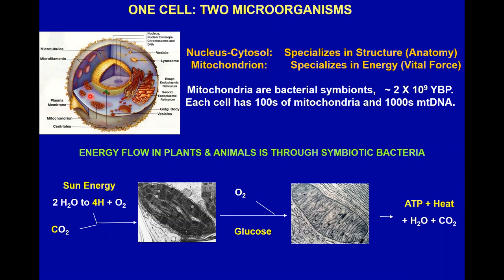These bacteria entered the cells that ultimately gave rise to us about two billion years ago. They brought their own DNA, which is transcribed into RNA and translated into proteins — their own independent information storage and retrieval system in parallel to the nucleus. In the nucleus, there are only two copies of each gene. But since there are hundreds of mitochondria per cell, each cell has hundreds to thousands of mitochondrial DNAs. So instead of a two-allele gene system as in the nucleus, we have a thousand-gene system in the mitochondria — a fundamental difference.